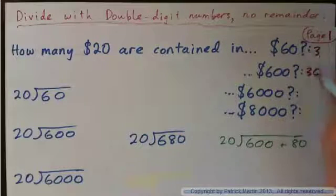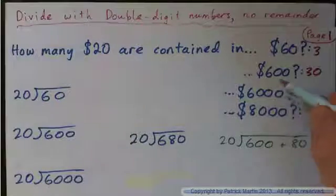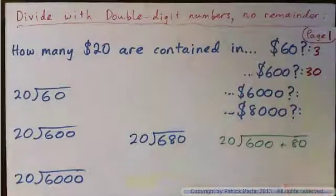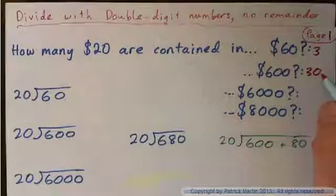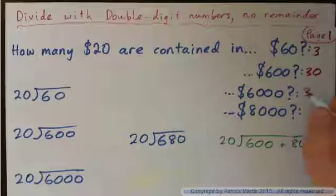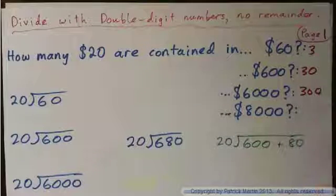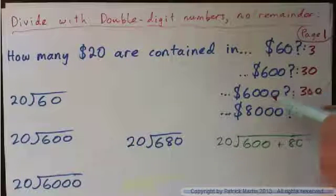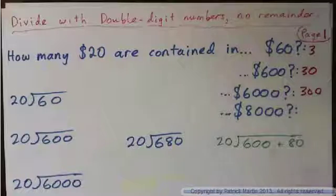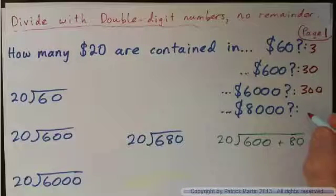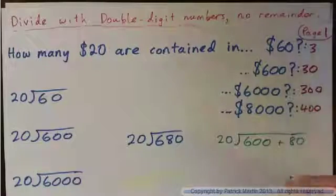There are three $20 bills in $60, so there must be 30 in $600. Now $6,000 is 10 times more again, so how many $20 bills are in $6,000? 10 times more than 30 — that would be 300. So how many $20 bills are in $8,000? If there are 300 in $6,000, how many in $8,000? The answer is 400.